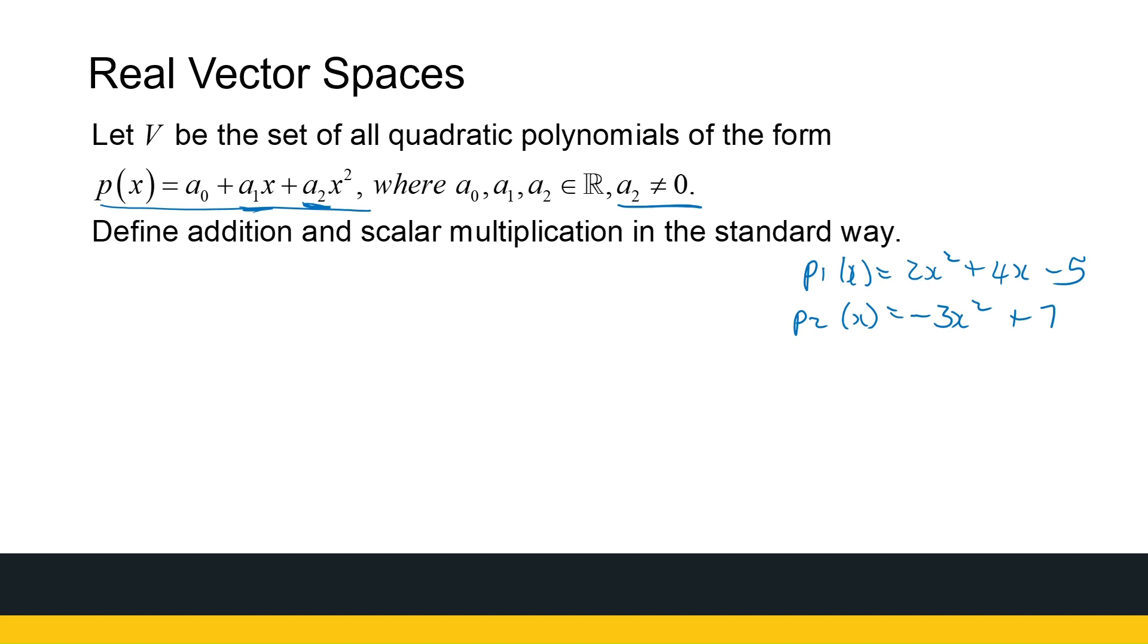So I want to start with quadratic polynomials and end with quadratic polynomials. Addition and scalar multiplication defined in the standard way of adding functions and multiplying functions with a scalar. Now, this one is not going to be a vector space. So the question is, how do we figure it out? Now, we need to look at the axioms and see which axioms it doesn't meet. And the nice thing is here, it's the first axiom that it won't meet. Now, I don't have to look at a general case.